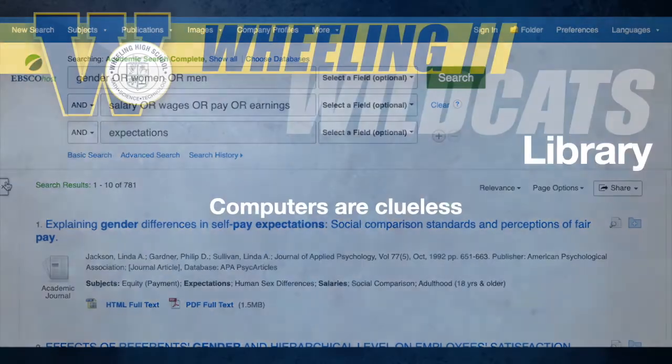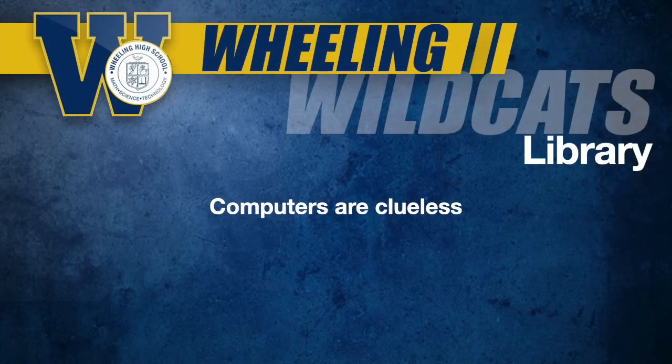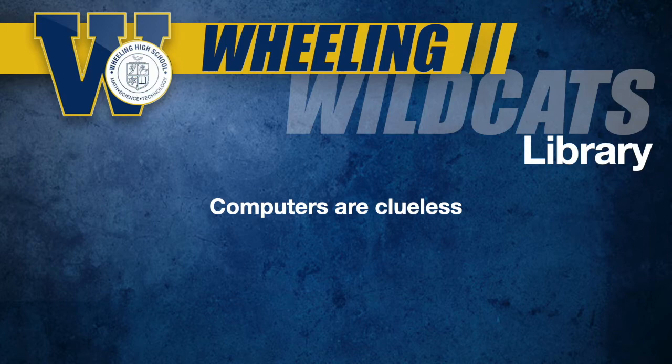Ultimately, computers are clueless. They don't know what any of the words in your search mean. The computer is simply trying to find articles that match your terms, in no particular order. If the author uses a different term — say wages or pay instead of salary — those articles will not show up in your results.